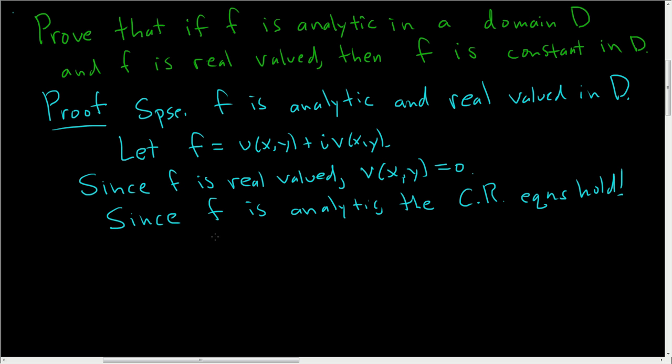So now let's compute the partial derivatives. Del U, del X, since the Cauchy-Riemann equations hold, this is actually supposed to equal del V, del Y. But del V, del Y is zero, because V is zero, so this is equal to zero.